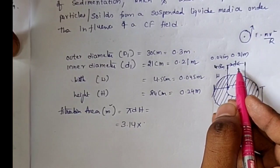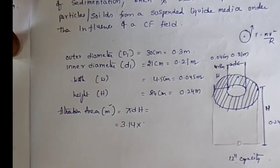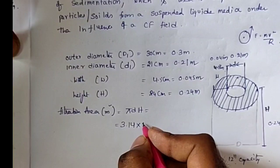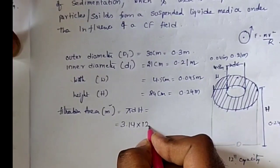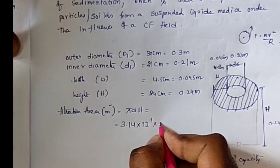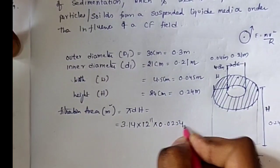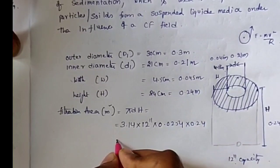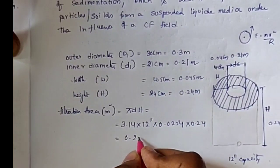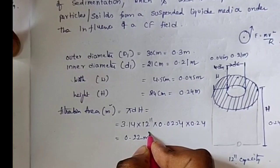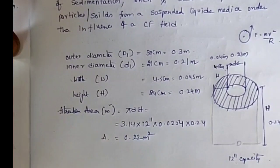A cylinder comes under 12 inch, converting that: 3.14 × 12 × 0.0254 × 0.24. If you solve this equation, you will get 0.22 meter square. That is called the area.